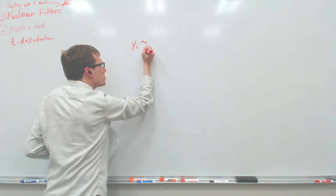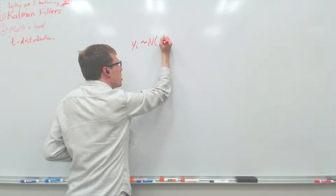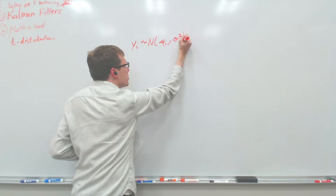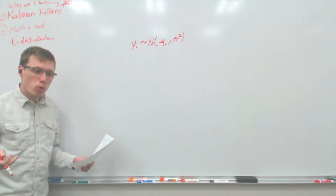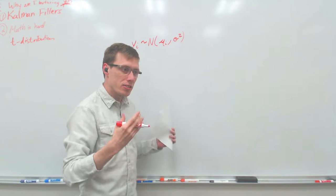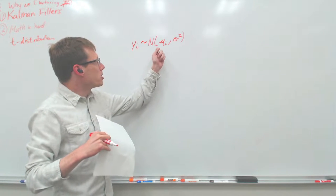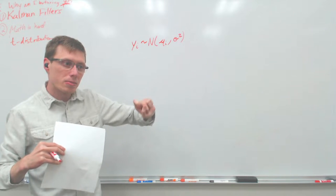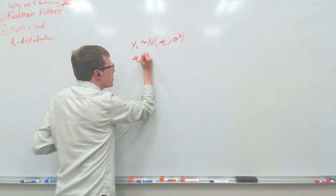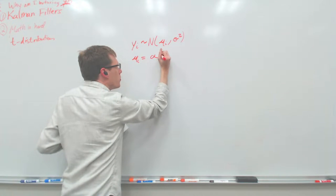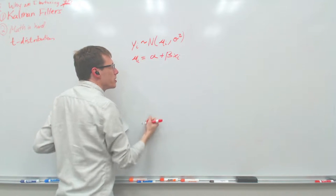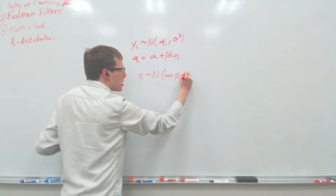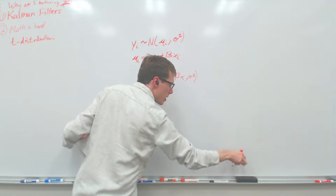First of all, the data is going to be distributed normally about some mean and have a standard deviation. I say mu_i because while before we assumed all the Chapman students just had heights distributed around their mean, here each data point is not distributed around the same mean — it's distributed about the line. Each one has a different point where we expect it to be centered, and that mu_i is going to equal alpha plus beta times x_i. So in other words, y_i is normally distributed around alpha plus beta x_i comma sigma squared.